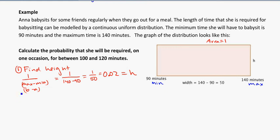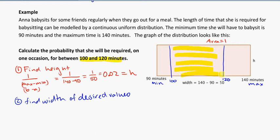Second thing is going to be find width of desired values. So here I'm looking to go somewhere between 100 and 120 minutes. So let's put that on here approximately, 100 and 120 minutes. So I want to calculate the probability that she has to work and babysit some time between those values.